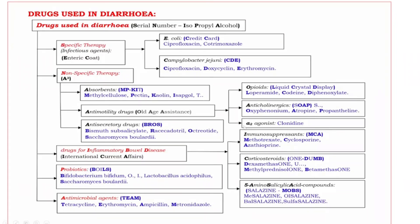Next, the last Non-Specific Anti-diarrheal drugs are Antisecretory Drugs, mnemonic BROS: B for Bismuth Subsalicylate or Racecadotril, R omitted, O for Octreotide, S for Saccharomyces boulardii.